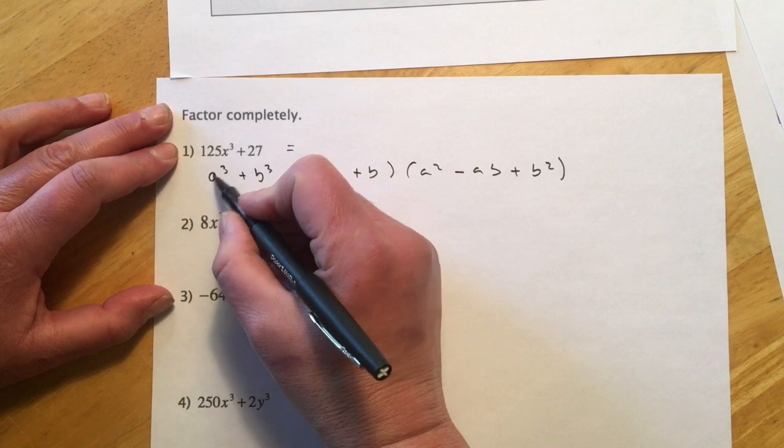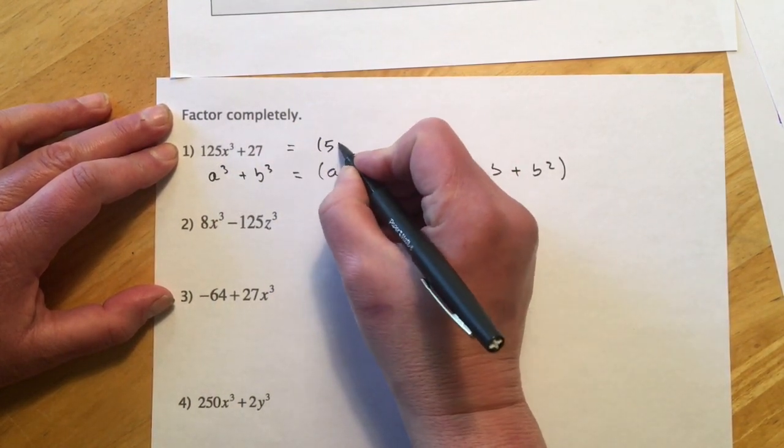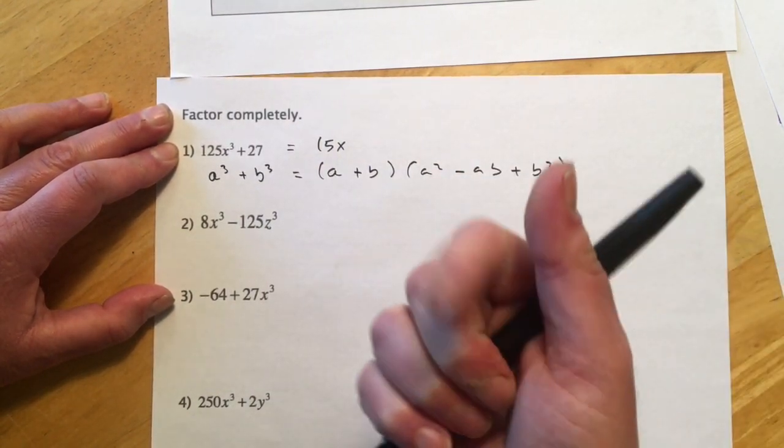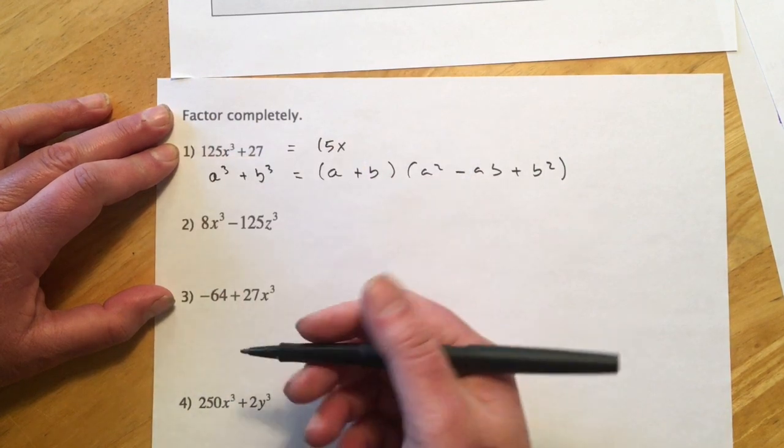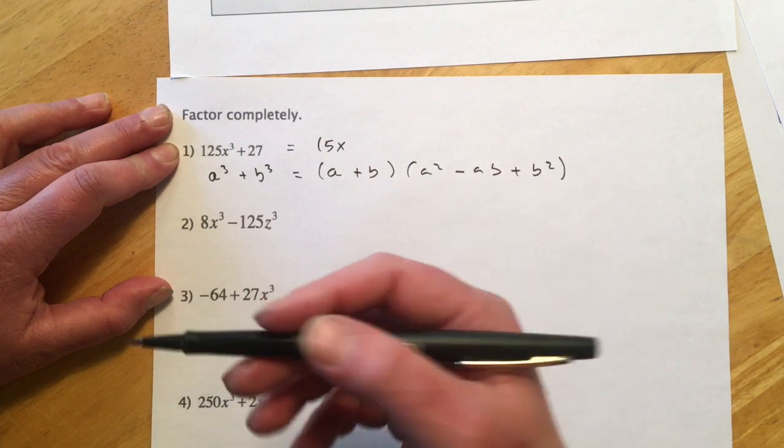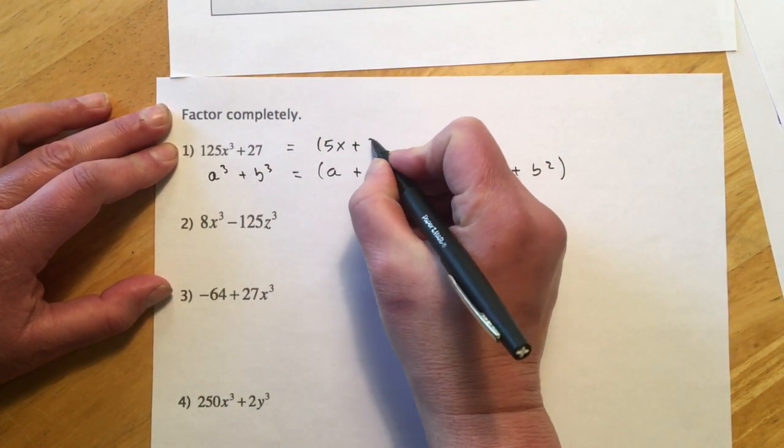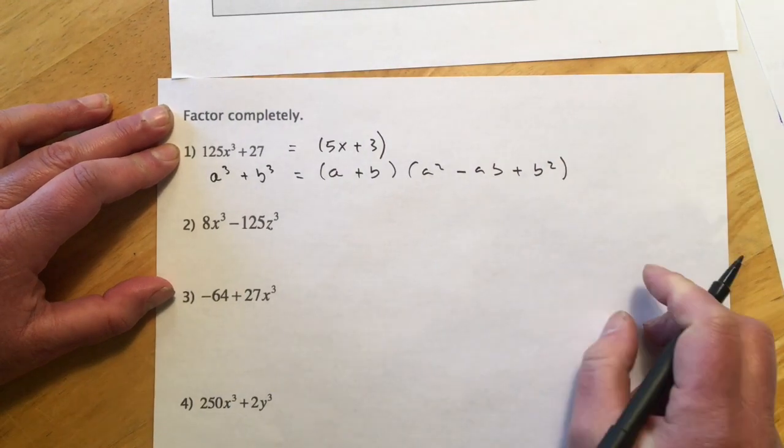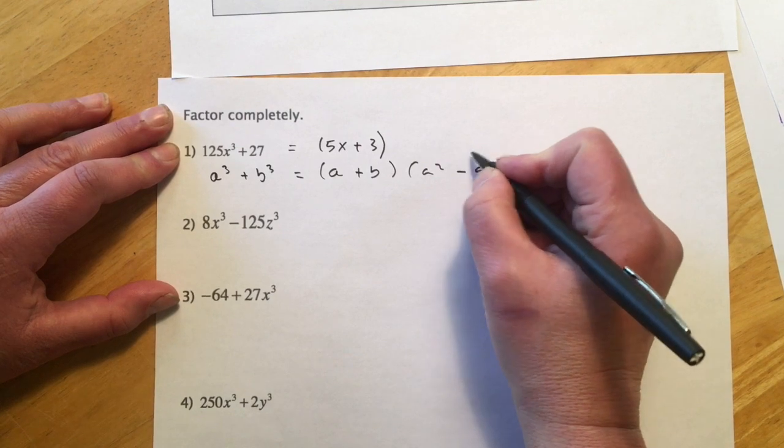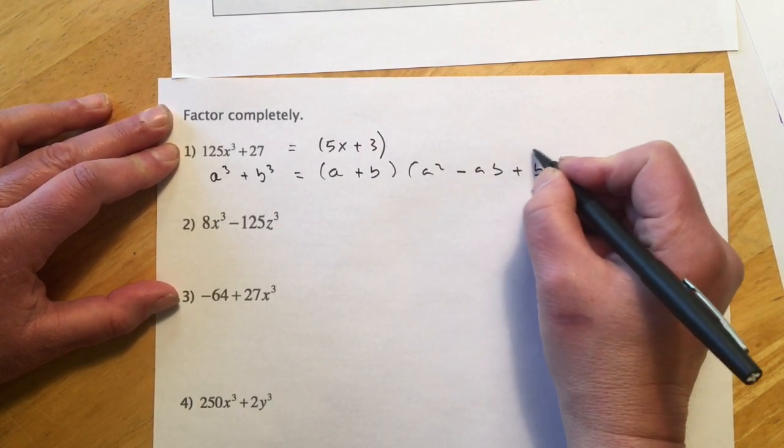Up here, so if A³ is just 125x³, then plain A is going to be 5x. So it's just like we did with the squares, but now it's cubes. So 5 times 5 times 5 makes 125. And then the 27, when we see 27s, we're going to think 3s, because 3 times 3 times 3 is 27. So that's going to break down to a 3. So I could plug 5x² minus 5x times 3, because that's just A and B, and then plus 3².